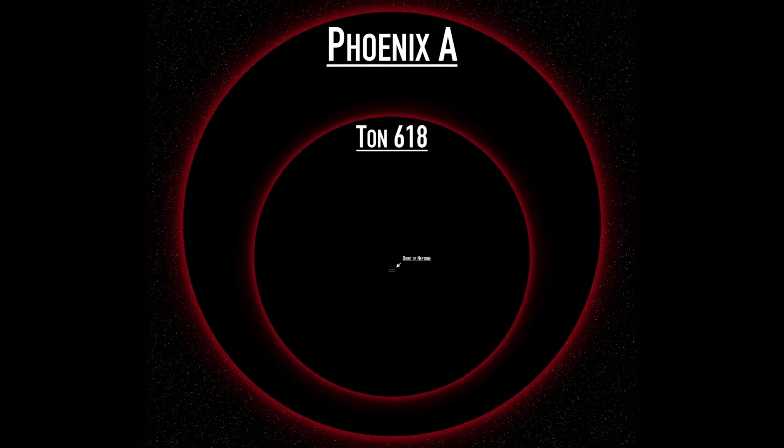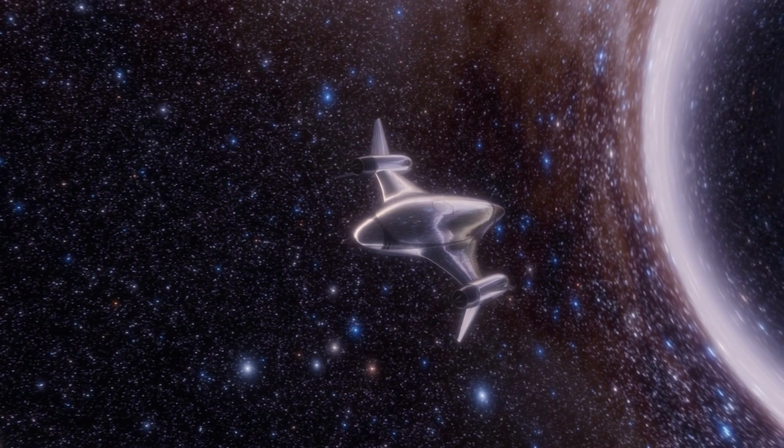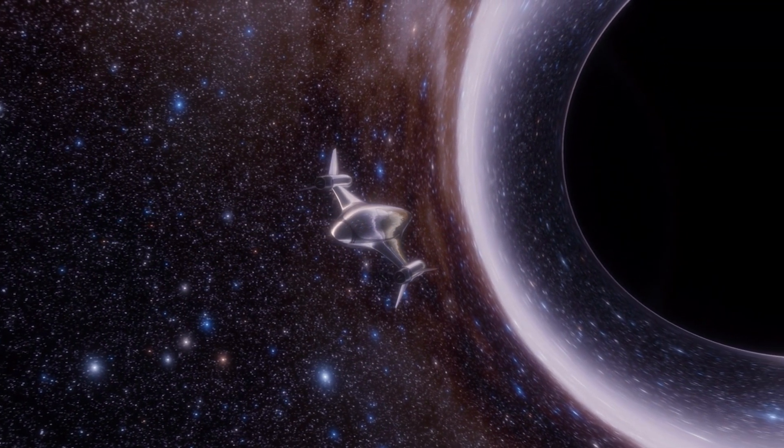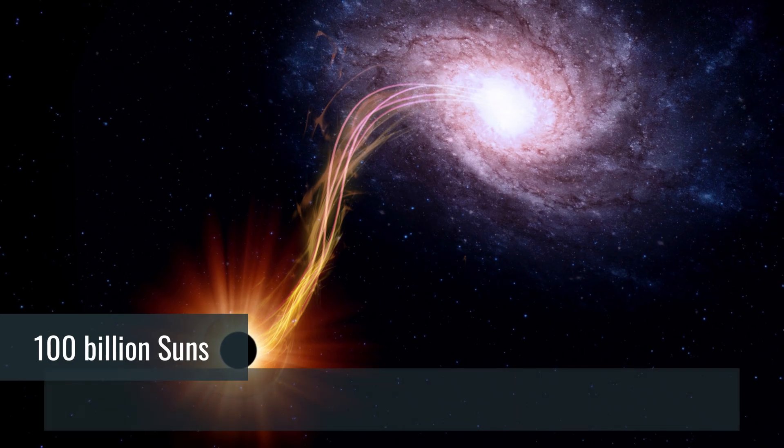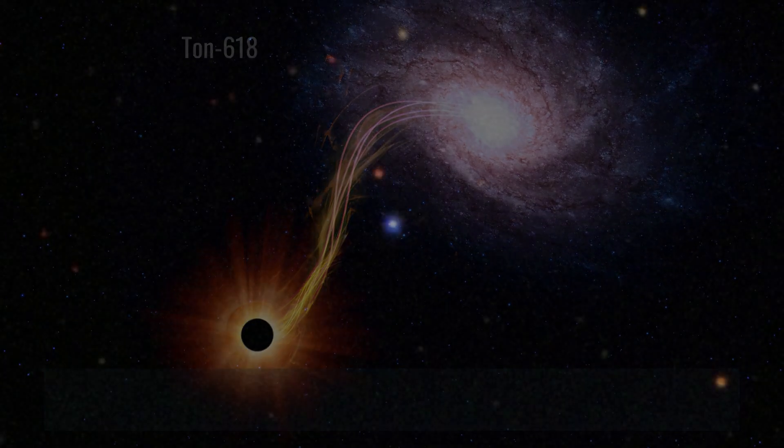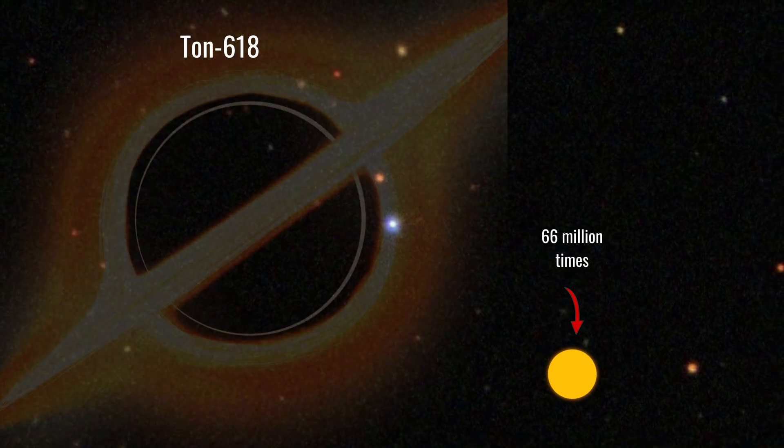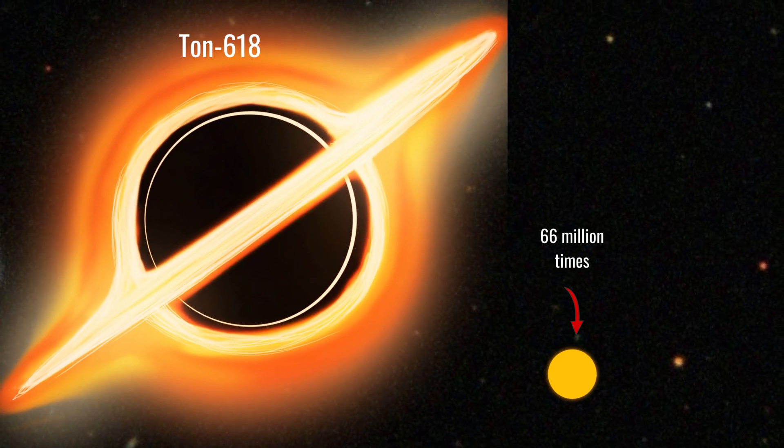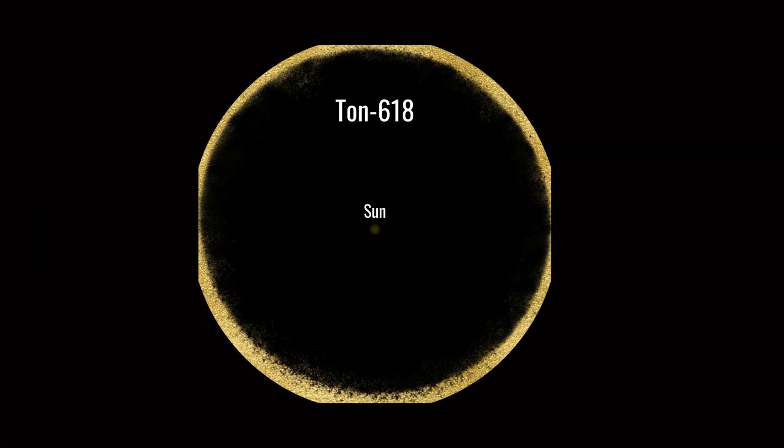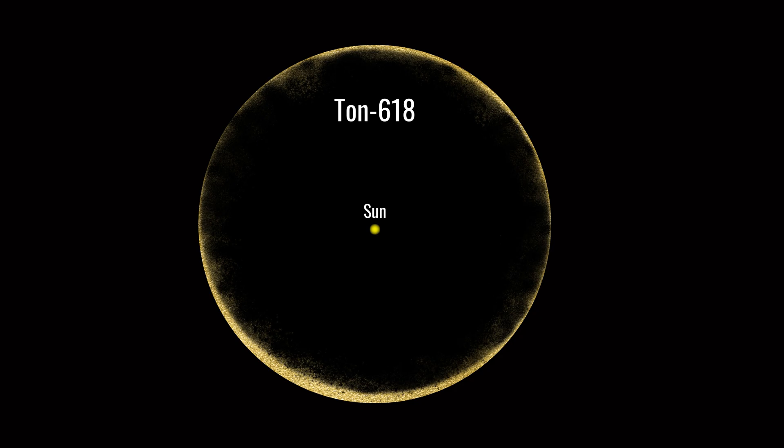Phoenix A black hole is bigger than TON 618. And as we mentioned earlier, Phoenix A is one of the biggest supermassive black holes, and it has 100 billion times more mass than our sun. Whereas TON 618 is just 66 million times more massive than the sun. This makes it significantly smaller in comparison and highlights the sheer size difference between these two objects.